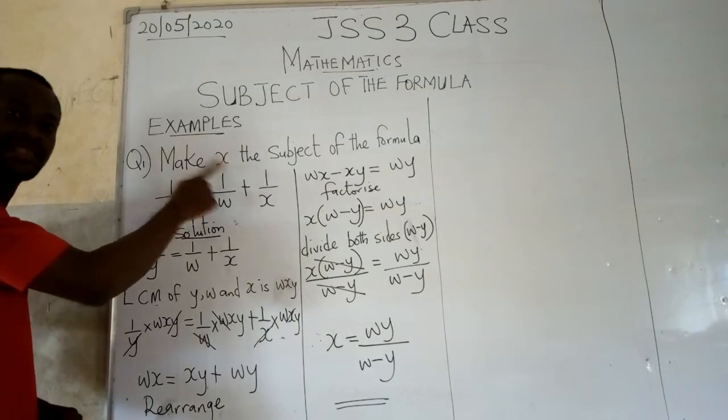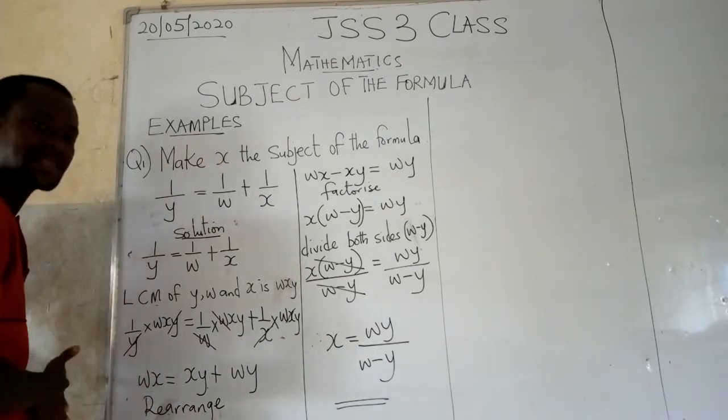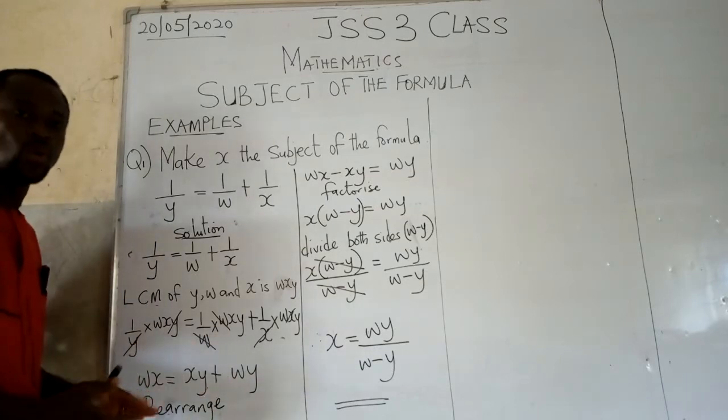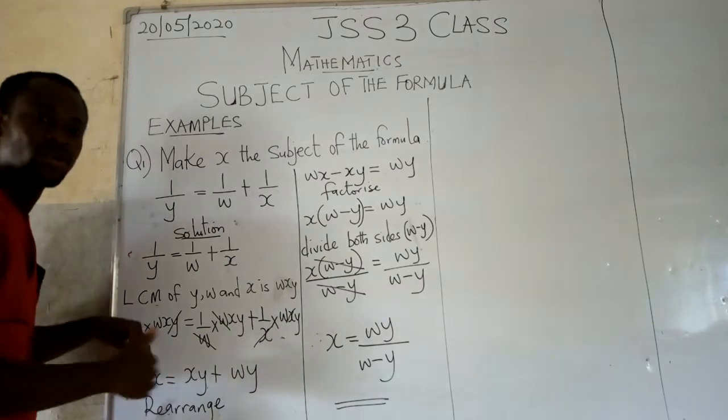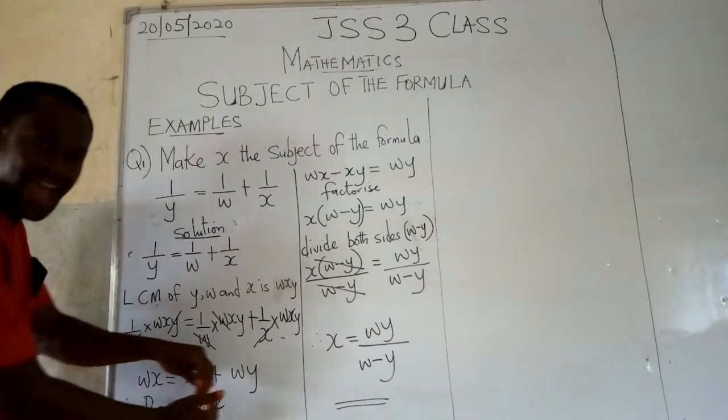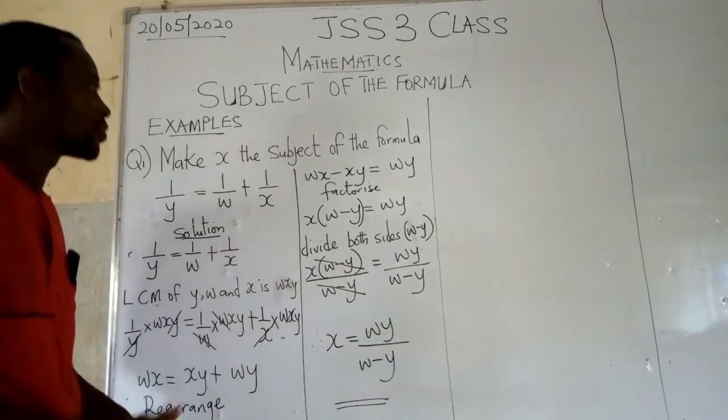We are trying to make x the subject of the formula. Then on the left hand side we have x. On the right hand side we have x. So we cannot settle on one. We said you must ensure that they are on one side. So on this note, we try to bring everything to one side by way of rearranging.